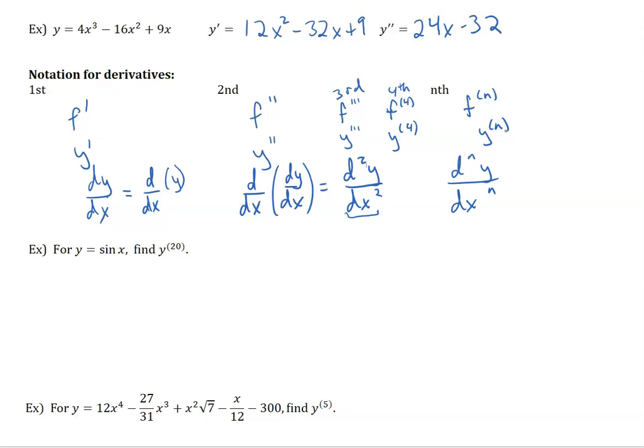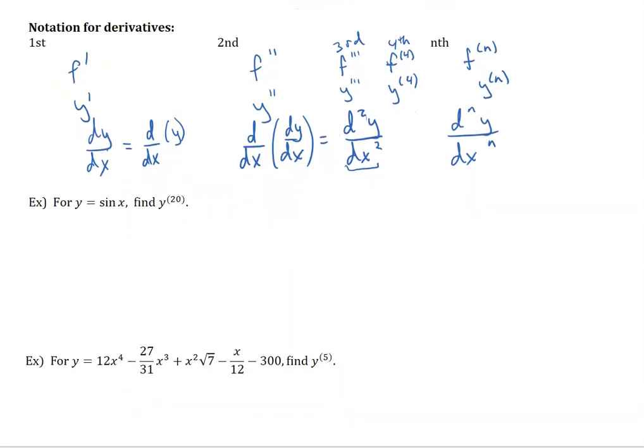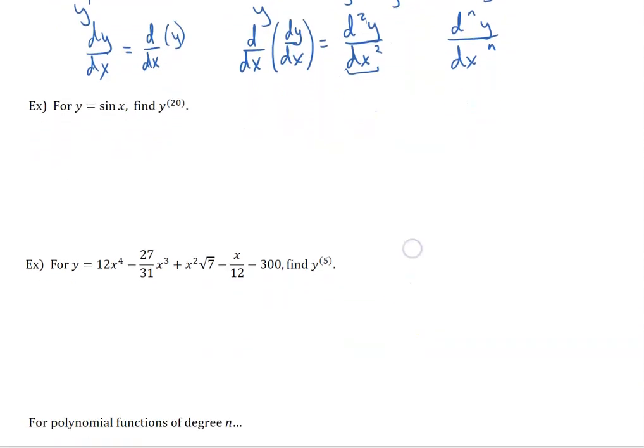So if you're asked for the second or third derivative, that just means take the derivative that many times. I do want to look at a particular case where a higher derivative gives us a little bit of a pattern. For sine and cosine, we know that with the possibility of including a negative as a coefficient, they are each other's derivative. So let's look at y equals sine of x, and it's asking us for the 20th derivative.